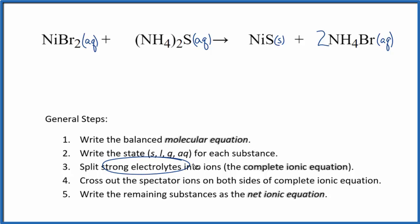Now we can split the strong electrolytes into ions for the complete ionic equation. We don't know the charge on nickel. It's a transition metal. But bromine, the bromide ion, is always 1-. We have two of them. This has to be 2+ to balance the charge.